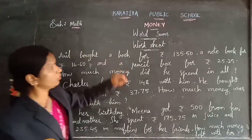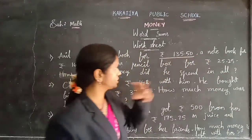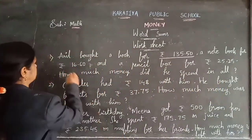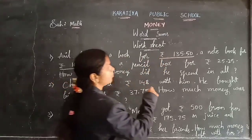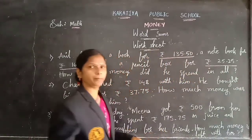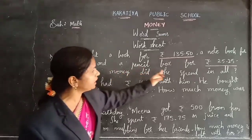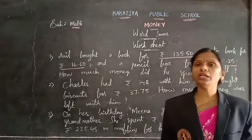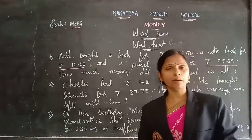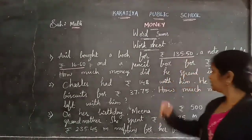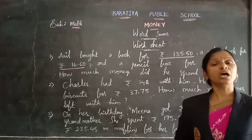Worksheet Problem 1: Anin bought a book for 125 rupees 50 paise, a notebook for 16 rupees 60 paise, and a pencil box for 25 rupees 25 paise. How much money did he spend in all? Means totally how much money he spent on these three items — you need to find the total amount, so you need to do the addition and add these three amounts.